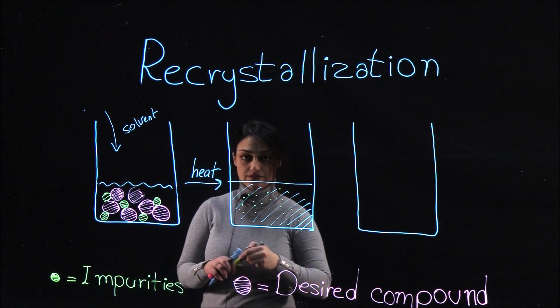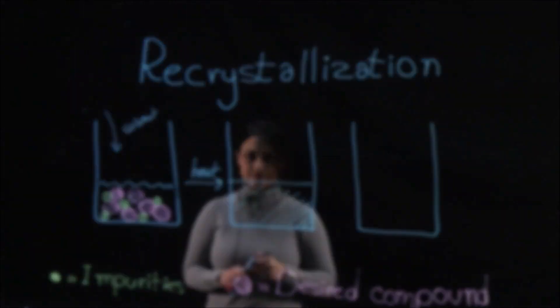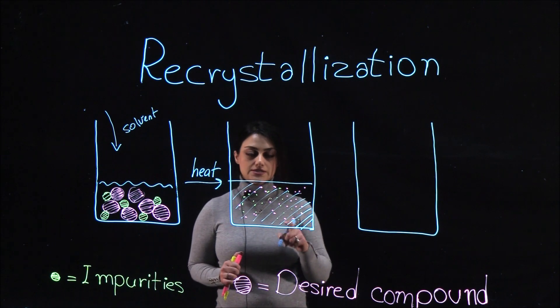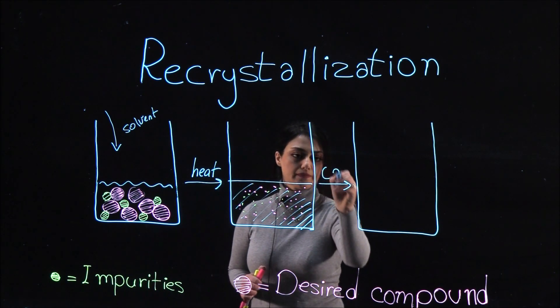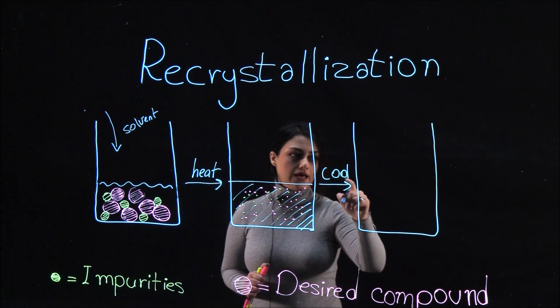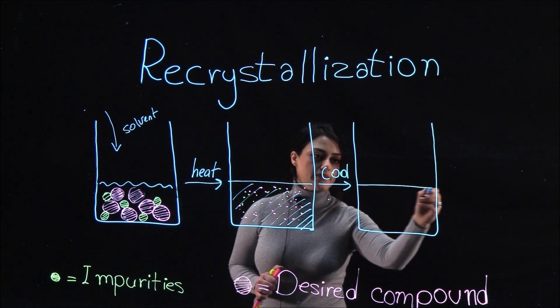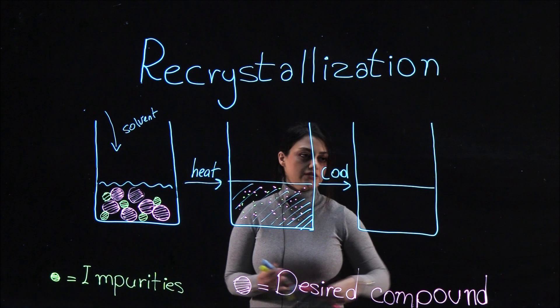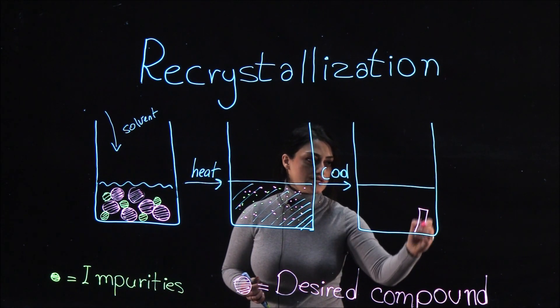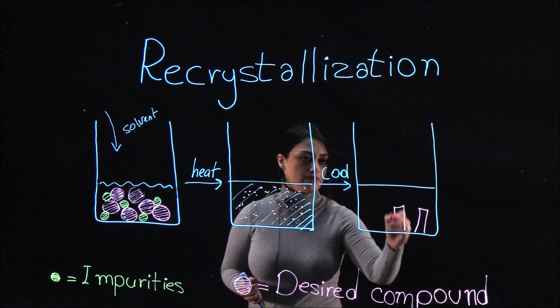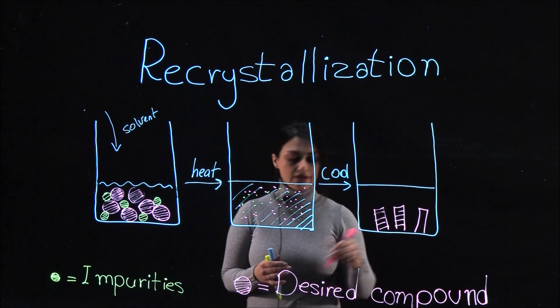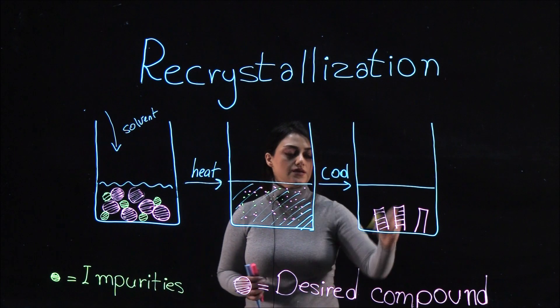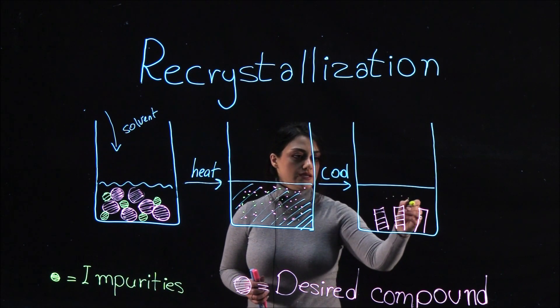Once the compound is dissolved, the solution is cooled. As the solvent cools, the compound will begin to crystallize. The slower the cooling process, the larger the crystals that form. If there are not significant impurities, the impurities will remain in the solvent.